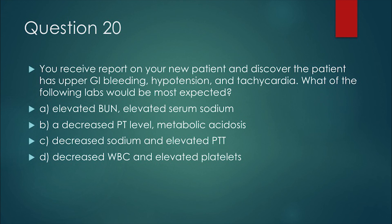Question 20. You receive report on your new patient and discover that the patient has upper GI bleeding, hypotension, and tachycardia. What of the following labs would be most expected? A. Elevated BUN and elevated serum sodium. B. A decrease in PT level and metabolic acidosis. C. Decreased sodium and an elevated PTT. Or D. Decreased white blood cell count and elevated platelets.